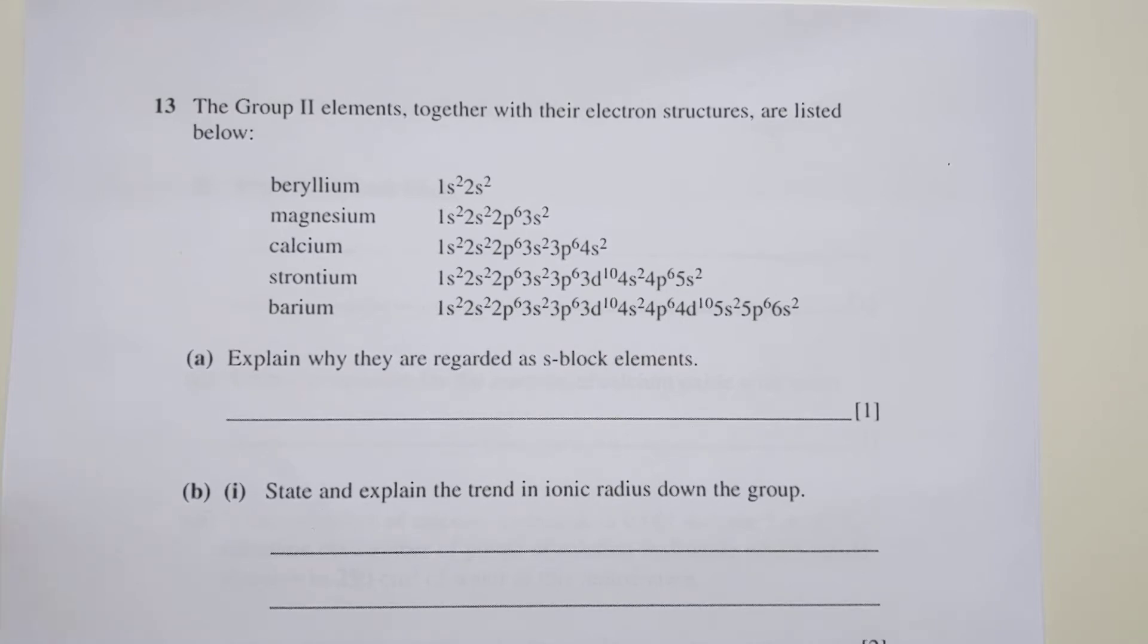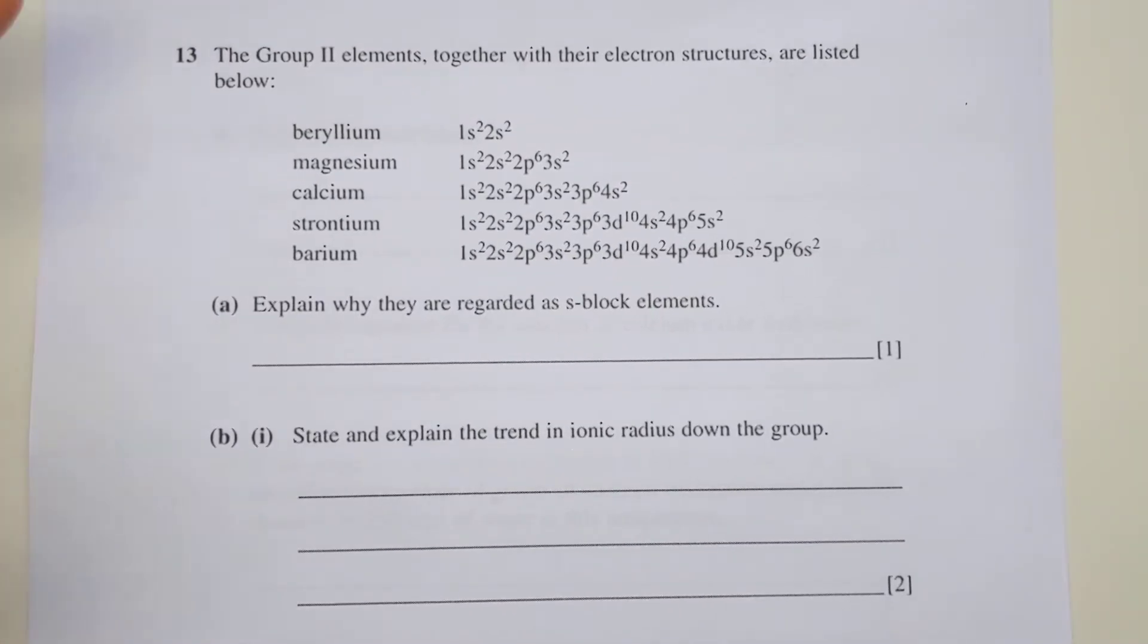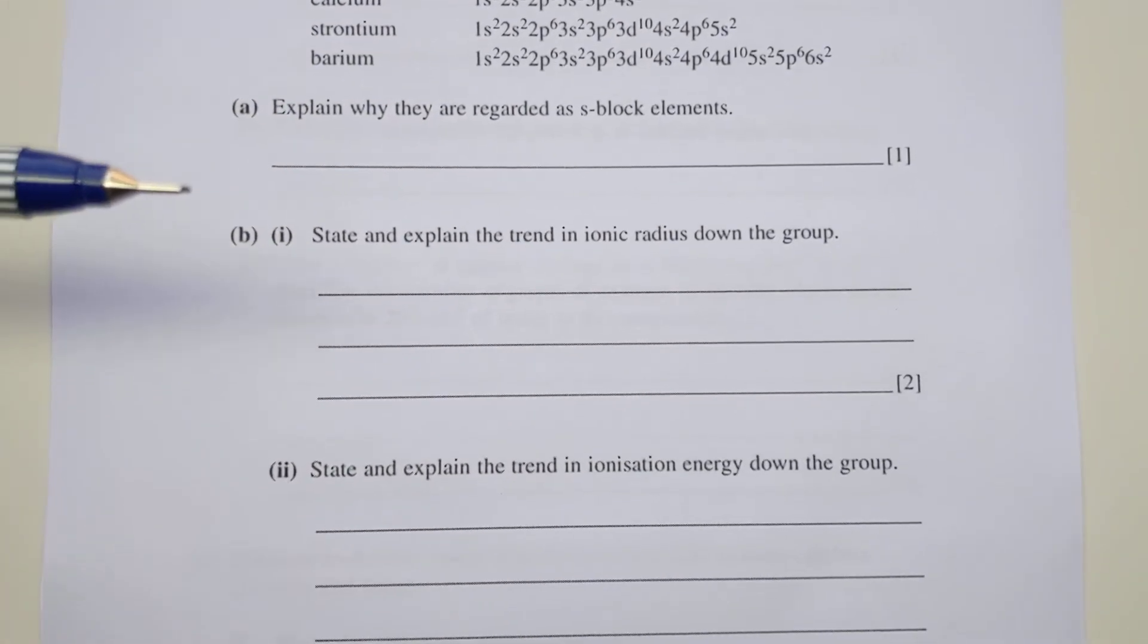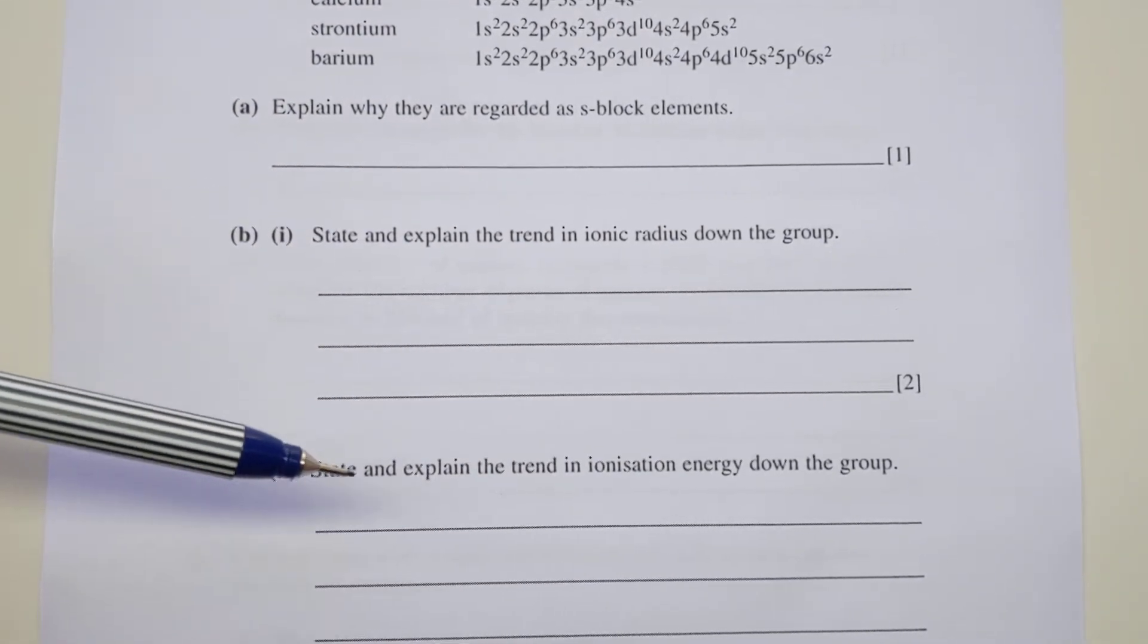The first question goes over some of the main trends about the Group 2 elements in terms of their s-block elements, their trend in atomic radius, and trend in ionization energy. Hopefully you don't find it too bad. Most of it is just straight out of the notes.